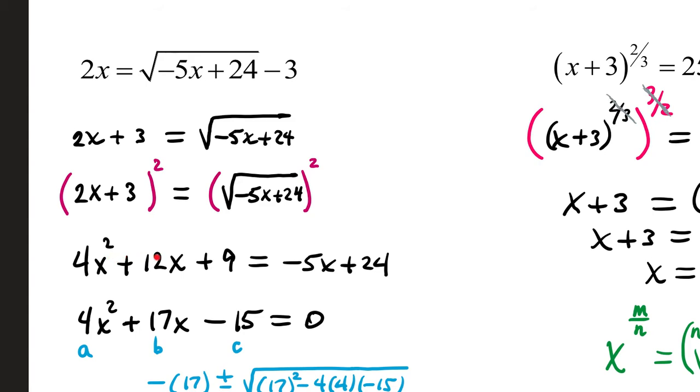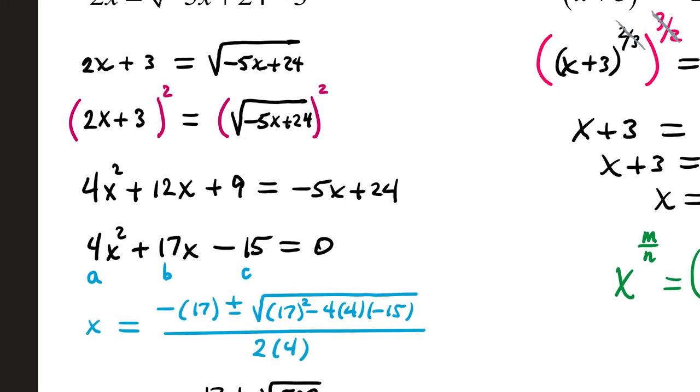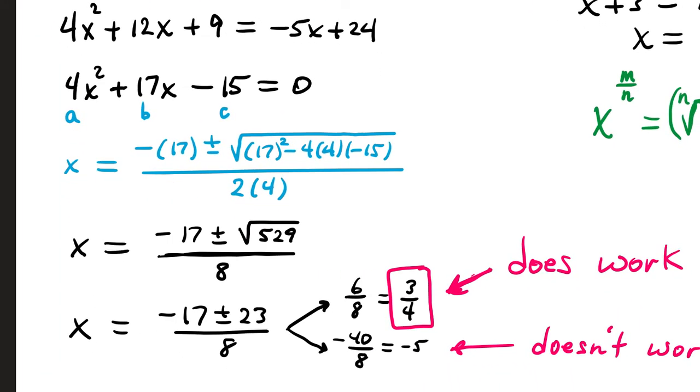Because this is a quadratic, we're going to bring everything to one side. Add 5x, that gives us 17x. Subtract 24. 9 minus 24 is negative 15. This can be factored, but if you're not comfortable factoring one this size, that's okay. I totally get it. You can always fall back on quadratic formula. A is 4, B is 17, C is negative 15.